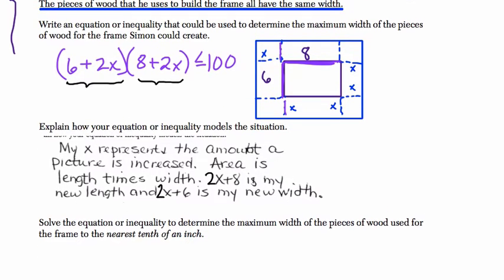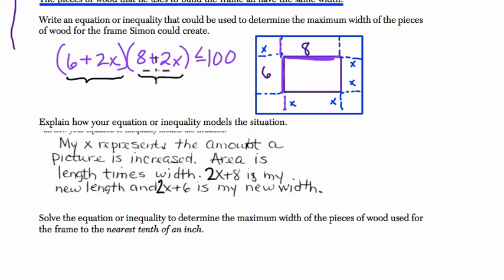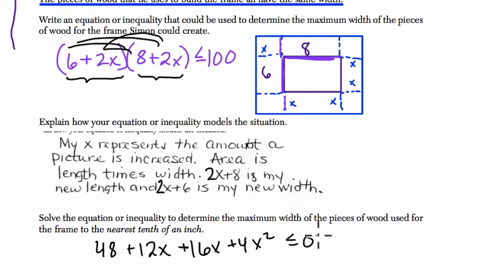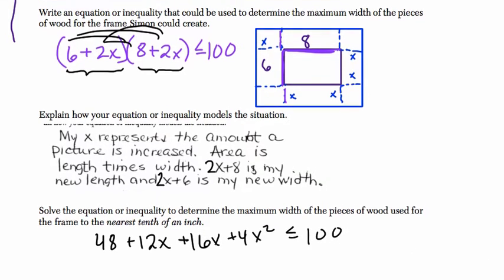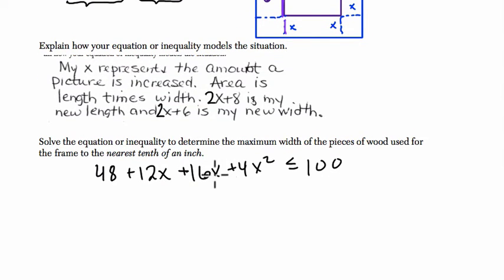Now it wants to solve this equation. We've got to first distribute and simplify. 6 times 8 is 48. 6 times 2x is 12x. 2x times 8 is 16x. And 2x times 2x is 4x squared. This is less than or equal to 100. 12x and 16x is 28x. I'll write it in standard form. So 4x squared plus 28x and then plus 48 is less than or equal to 100.